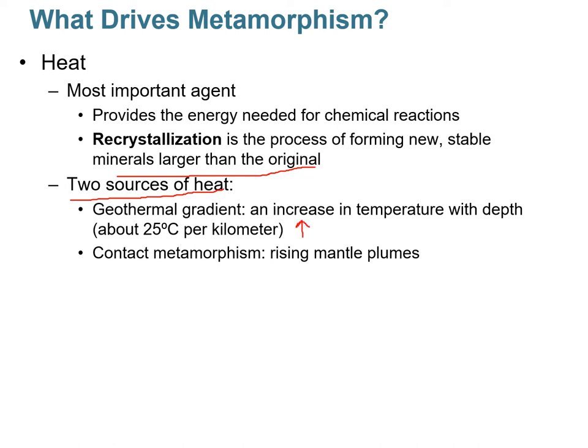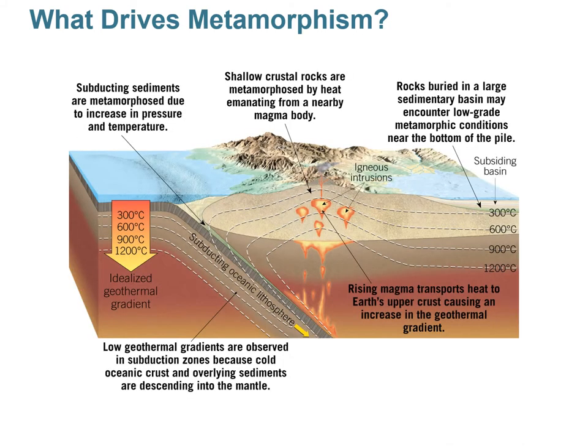There are two sources of heat that drive metamorphism. First, it gets hotter the deeper you go within the earth — the geothermal gradient is approximately 25°C per kilometer of depth. Second, rising mantle plumes — anomalously hot portions of the mantle — partially melt as they rise, and those melts meander through the crust, providing heat to existing rocks. This is called contact metamorphism.